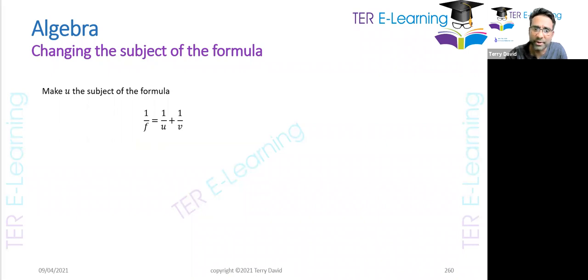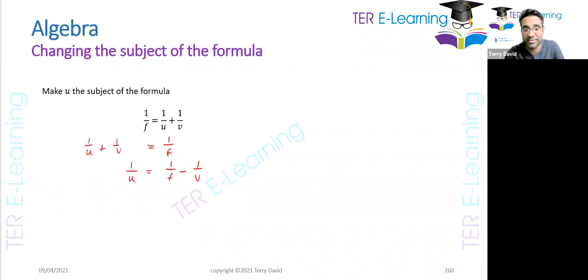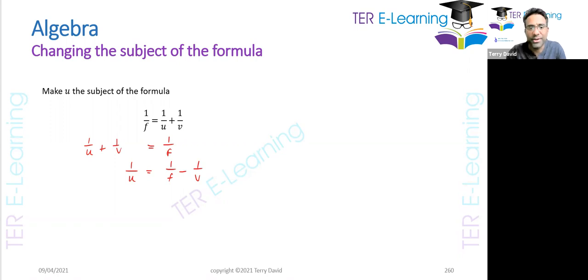In this one we want to make u the subject of the formula. I'm going to write this as 1 over u plus 1 over v is equal to 1 over f. I want to get 1 over u is equal to 1 over f minus 1 over v — that's how we get rid of the 1 over v on the left side. This is where things get a little confusing for some students.